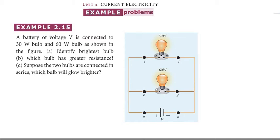Hi students, greetings from SEX Education Academy Physics. Unit 2 Current Electricity, Example Problem 2.15. A battery of voltage V is connected to a 30 watt bulb and 60 watt bulb.